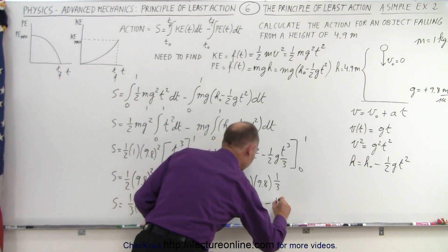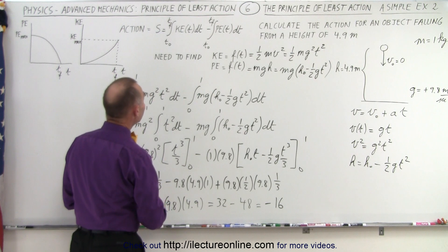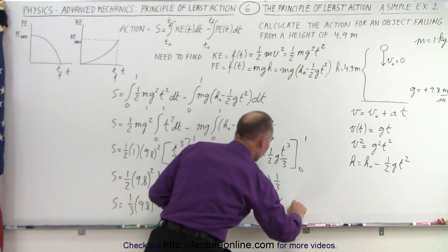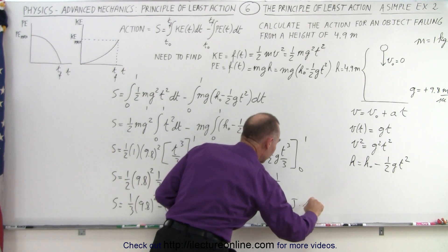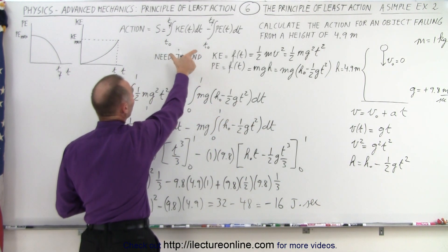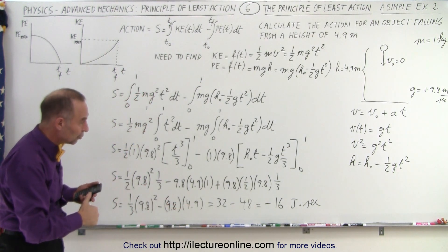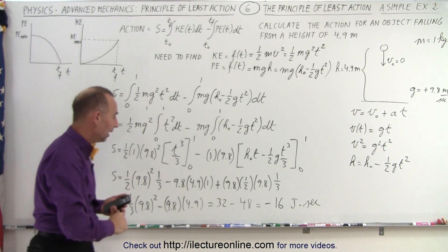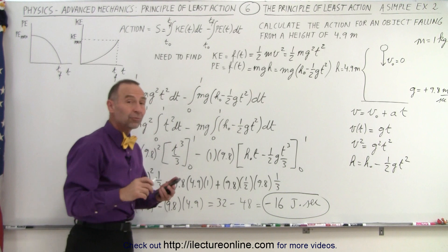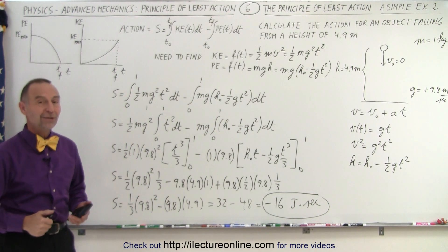The difference is minus 16. Units-wise, we're integrating the kinetic energy over time, so that would be joules times seconds. If you want the average kinetic energy, you'd divide the whole thing by the time interval. The action is indeed in units of joules times seconds, and that would be the answer for this particular case for an object dropping from a height of 4.9 meters. And that is how it's done.